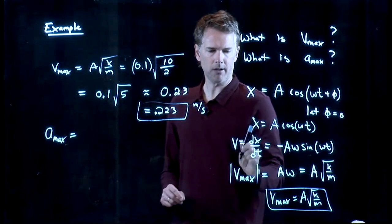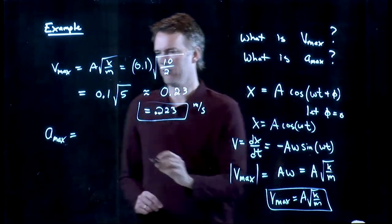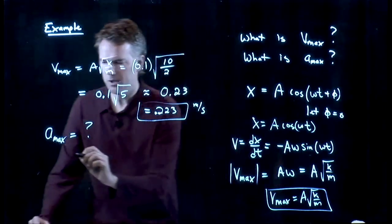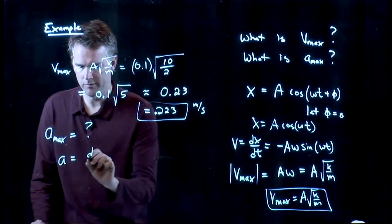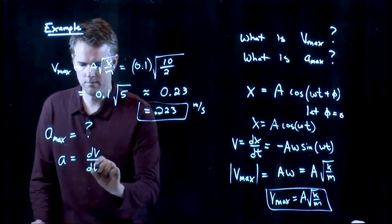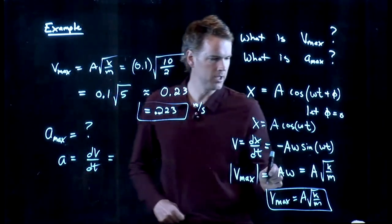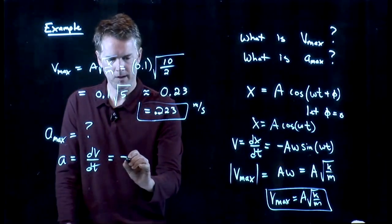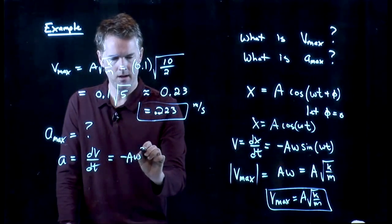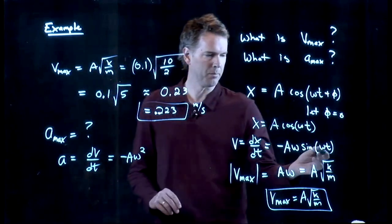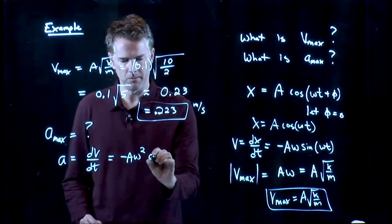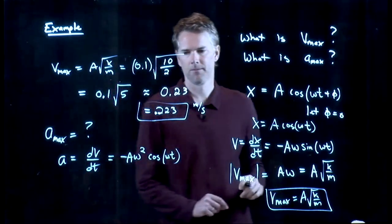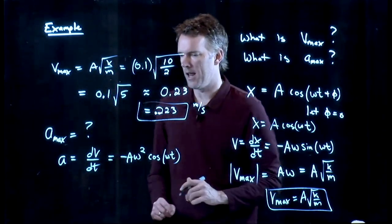Well, to get A max, we have to go back to V. And we know that A is going to be a derivative of V. And we know what V is. It's right here. So when I take a derivative of this thing, what do I get? I get negative A omega squared. I have to pull out another omega from the argument. And then the sine goes back to cosine.